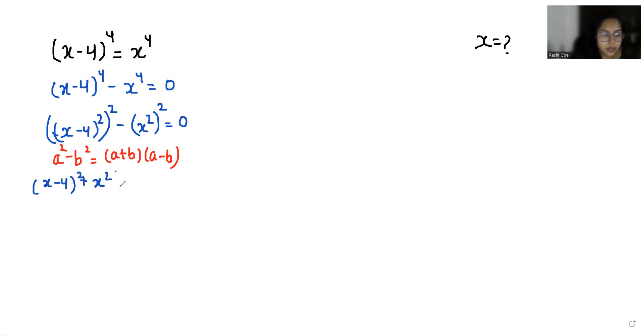Again here I'm going to use the famous identity (a - b)² = a² + b² - 2ab.